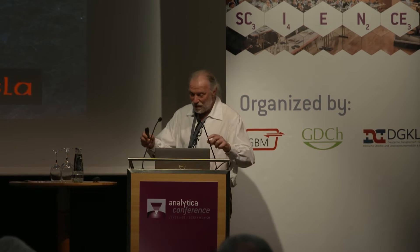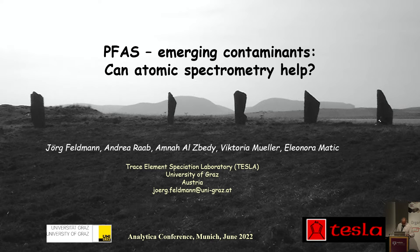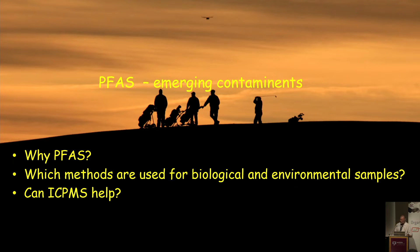I've only half an hour. So PFAS, Emerging Contaminants — can atomic spectrometry help there, for the analysis? What I would like to cover is, first of all, what are PFAS? And which methods are actually used for biological and environmental samples? And can ICP-MS help or other techniques?